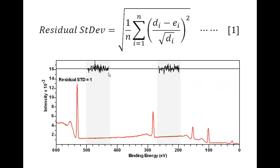We now need to work out why the residual standard deviation is equal to unity for a curve that fits data. The residual standard deviation is calculated from the difference between the data in each data bin and the curve that fits the data.